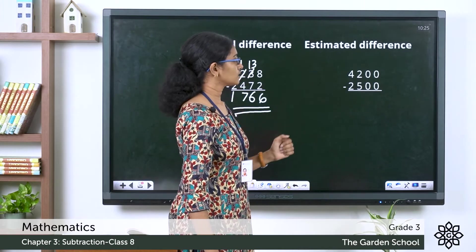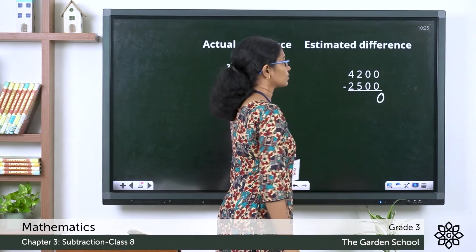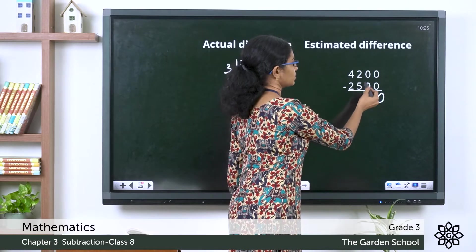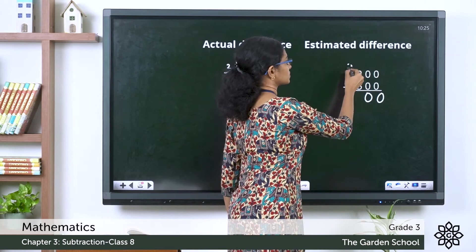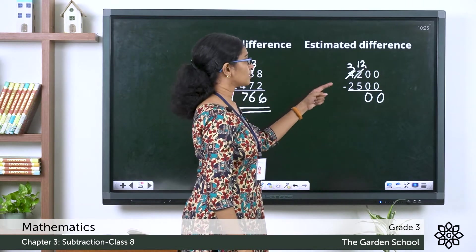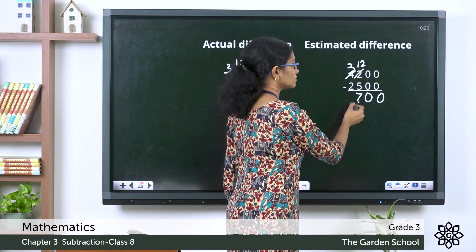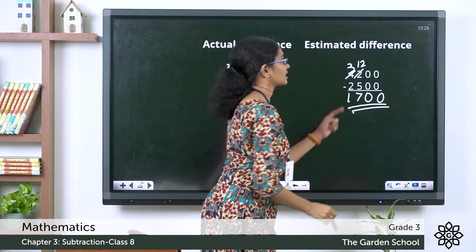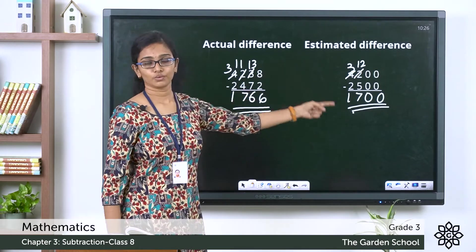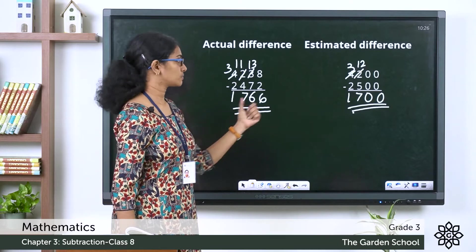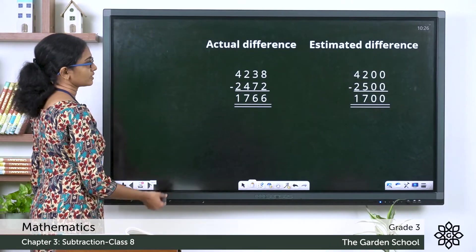Now let's find the estimated difference using the rounded values 4200 minus 2500. 0 minus 0 is 0, 0 minus 0 is 0. 2 minus 5 — we borrow: 12 minus 5 is 7. 3 minus 2 is 1. So the estimated difference is 1700. In this case the actual difference of 1766 is slightly more than the estimated difference of 1700, but they are close.